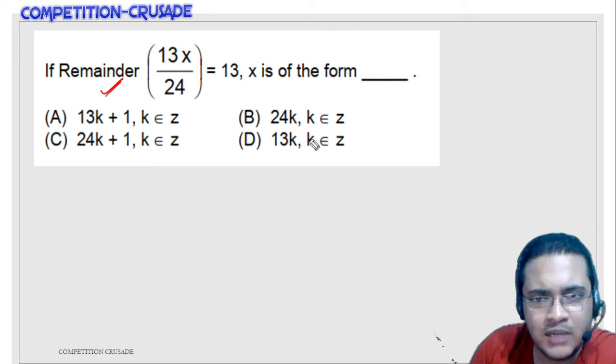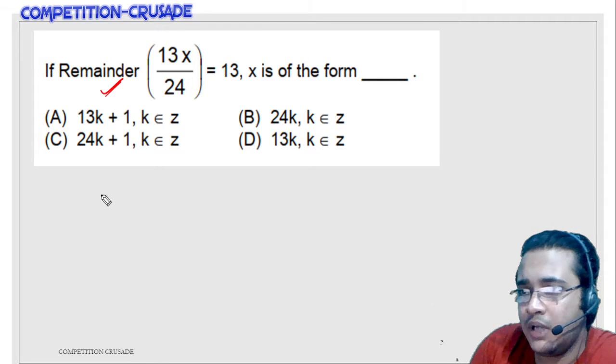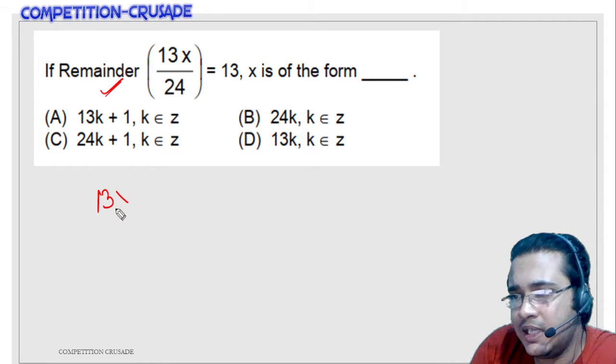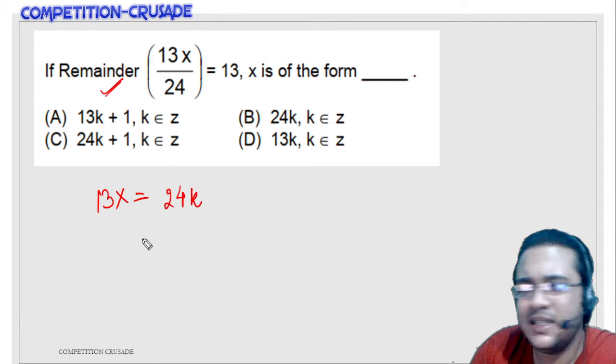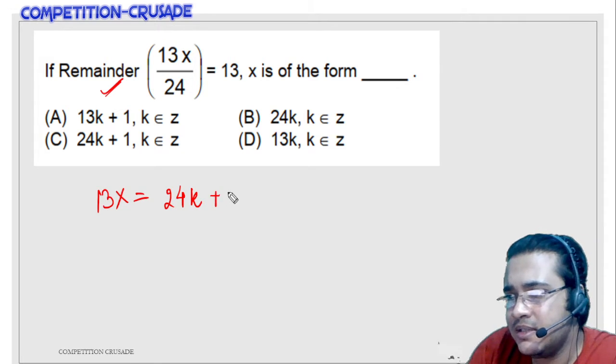I have told you the division lemma: dividend is equal to divisor into quotient plus remainder. So I will do the exact same thing. 13x is equal to dividend is equal to divisor into quotient. I will say quotient as k, I don't know what is the quotient, and remainder is 13.